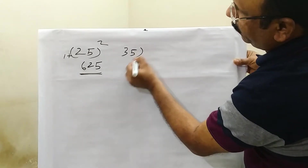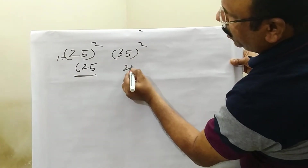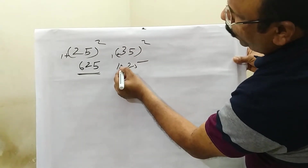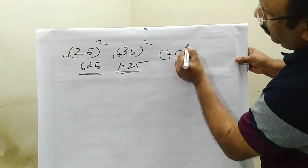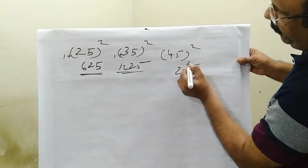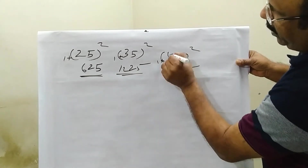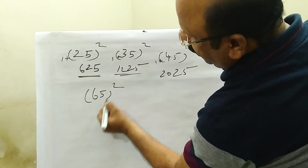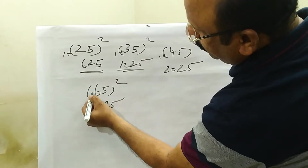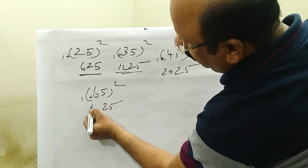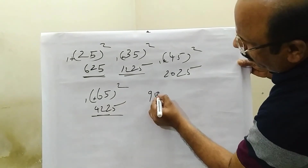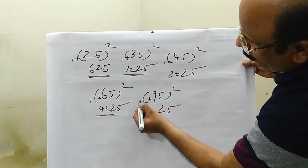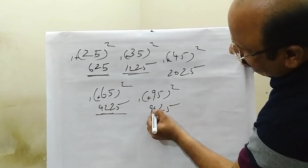Let's say 35 squared: 5 fives are 25. 3 over plus 1 is 4; 4 threes are 12. Answer is 1225. For 45 squared: 5 fives are 25; 4 over plus 1 is 5; 5 fours are 20. Answer is 2025. For 65 squared: 5 fives are 25; 7 times 6 is 42. Answer is 4225. For 95 squared: 9 over plus 1 is 10; 10 nines are 90. Answer is 9025.